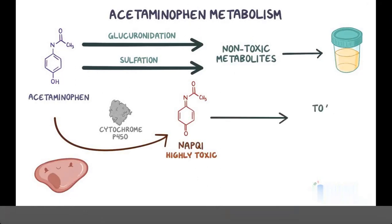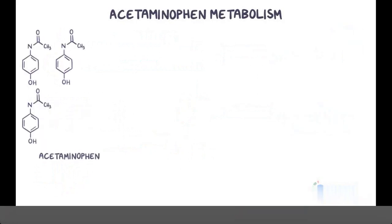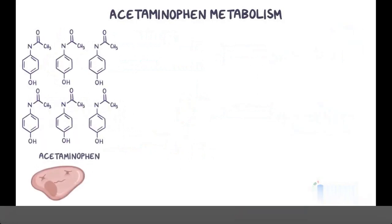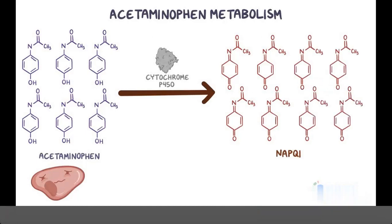Normally, this toxic metabolite is inactivated by an antioxidant called glutathione. So in therapeutic doses, acetaminophen doesn't cause severe side effects. But if someone takes too much acetaminophen, the hepatocytes can't break it all down, so more acetaminophen undergoes cytochrome P450 metabolism, which creates more NAPQI. Because there's a limited amount of glutathione in hepatocytes, high levels of NAPQI will deplete it, causing a buildup of NAPQI. This toxic metabolite will start causing cell death and acute hepatic necrosis.